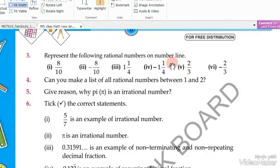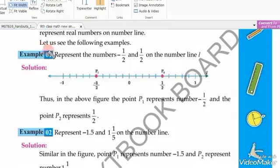Question number three: represent the following rational numbers on the number line. Let's draw the line.